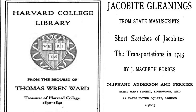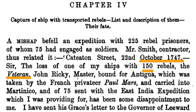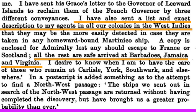We're going to be looking at Jacobite gleanings related to the transportations of 1745. We'll look at a list and description of transported rebels, including information about their fate. We are looking at information related to the ship known as the Veteran. You can see notations about where people ended up — again, Barbados, Jamaica, and Virginia.